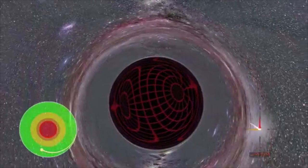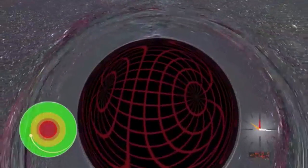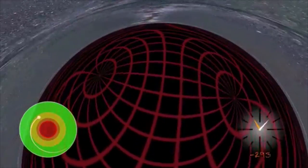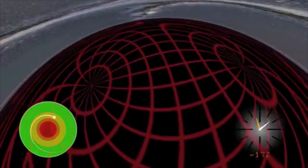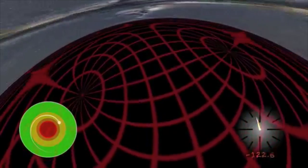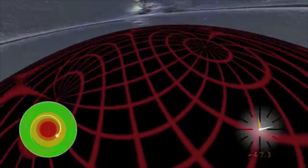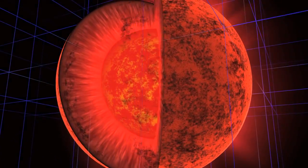The controversial view of black holes is that it is composed of two key components, the singularity and the event horizon. Anything else is just details. The event horizon is the distance from the singularity where the gravitational forces are so strong not even light can escape. The singularity is an infinitely dense point where all the matter of the black hole is concentrated.